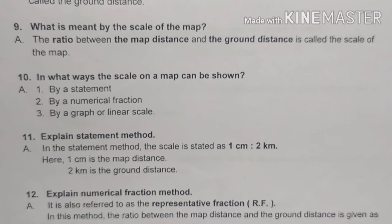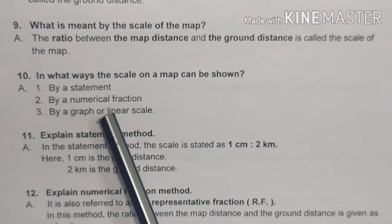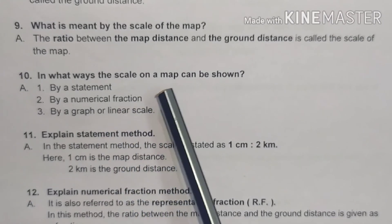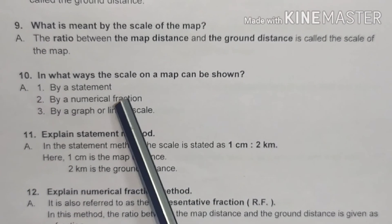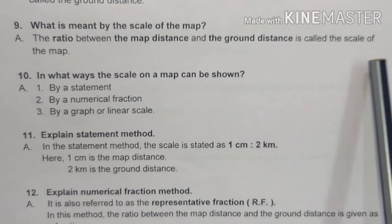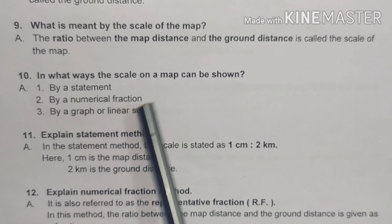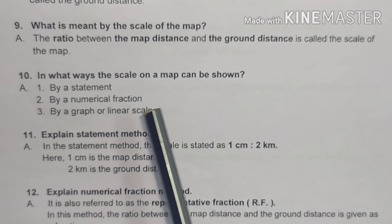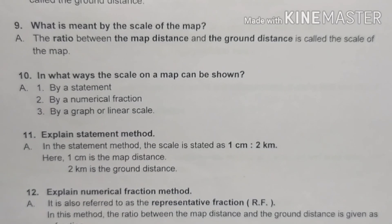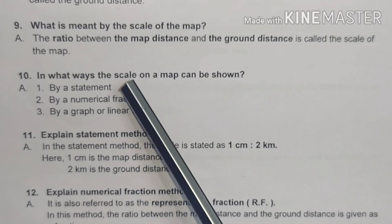In what ways can the scale on a map be shown? First, by a statement; second, by a numerical fraction; third, by a graph or linear scale. Now let us learn in detail about these three methods.